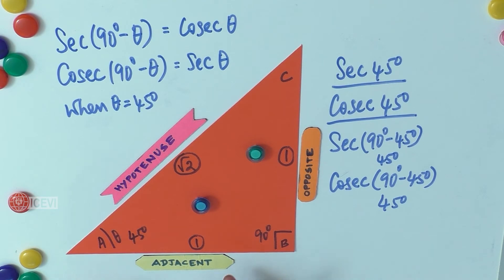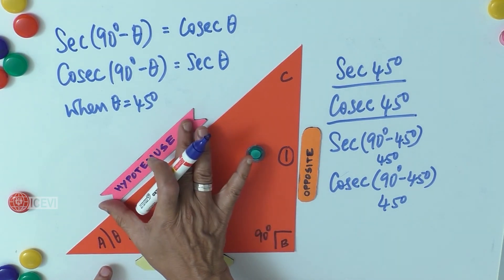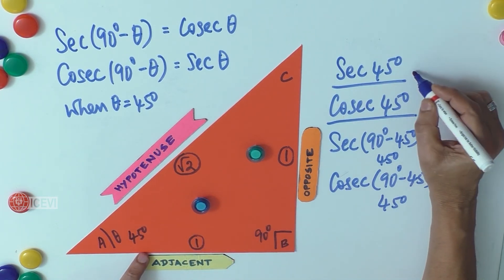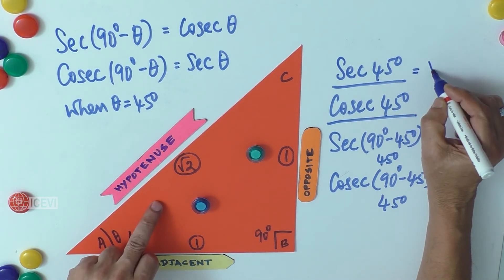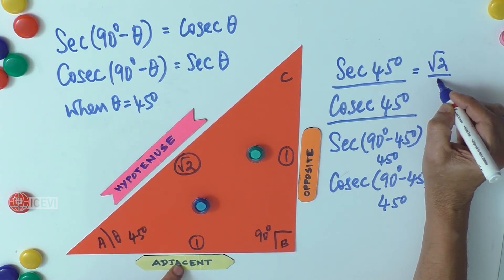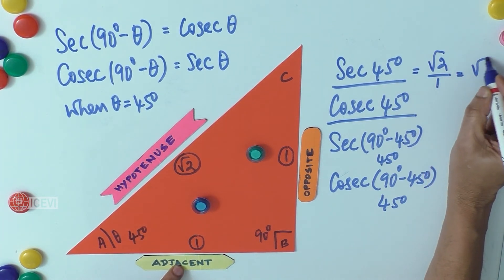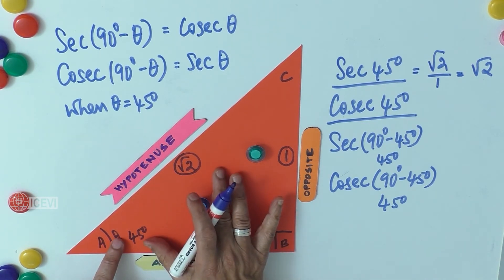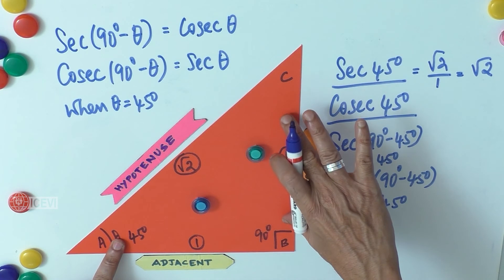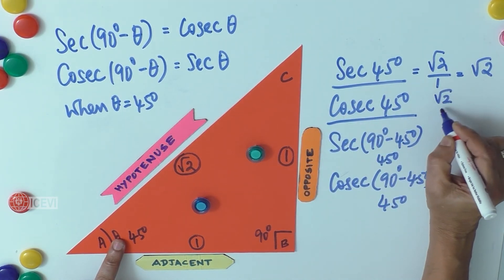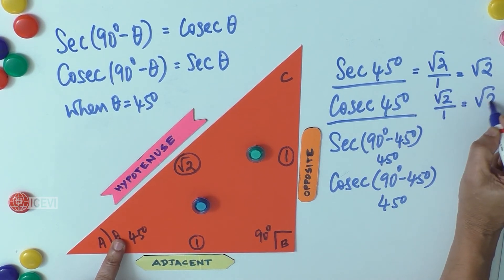Secant theta is hypotenuse divided by adjacent, so that is √2 divided by 1, which is √2. Cosecant theta is hypotenuse divided by opposite, that is √2 divided by 1, which is also √2.